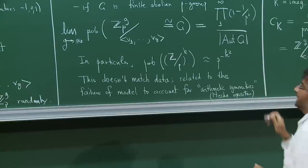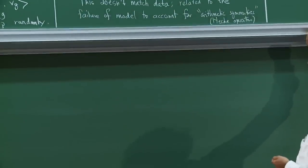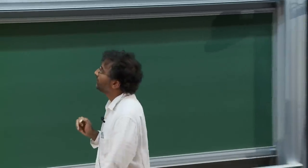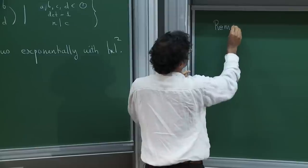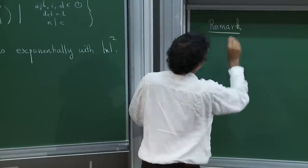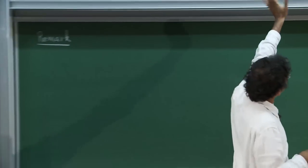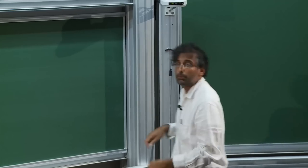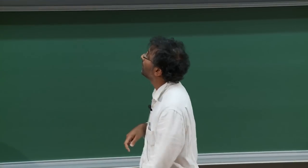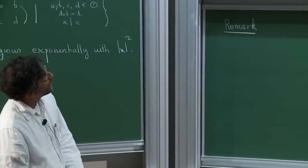This model knows nothing about the Hecke operators, and the Hecke operators greatly change things. There's a very similar phenomenon to this failure. The main point is: this heuristic doesn't account for the Hecke operators. This is one way in which it becomes visible — it gets the group structure wrong.